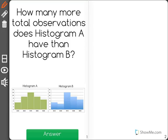How many more total observations does histogram A have than histogram B? The way you find this out is we find out how many observations there are in each value. So let's start.